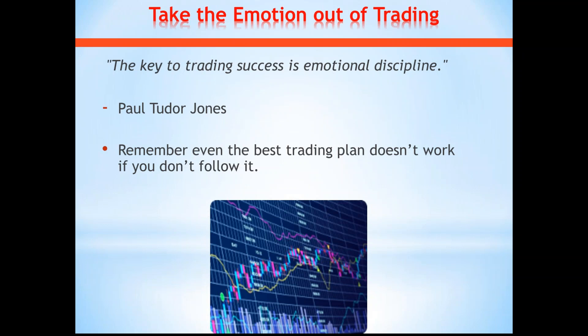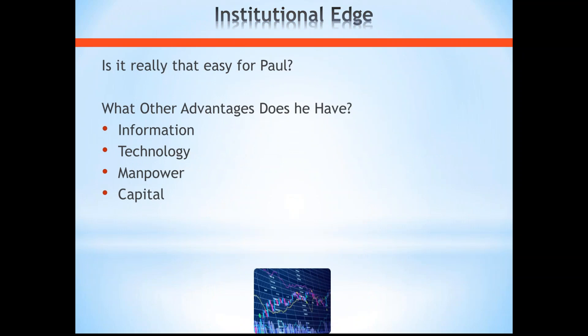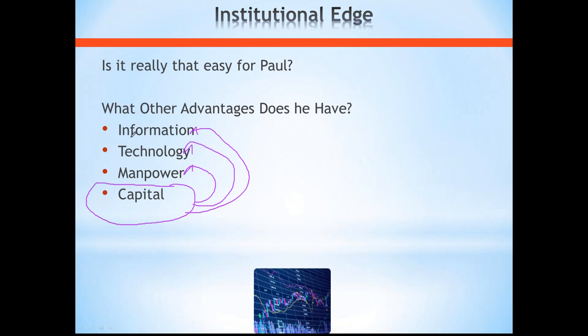But is emotional discipline really all there is to Paul Tudor Jones's success? We want to talk about institutional edge, which is mainly derived from capital. They have so much more capital than a retail trader, and that capital gives them access on a higher level to information, technology, and analysis. The more capital an institution has, the higher quality information they can get. I can get information on the internet, but I can't pay for Bloomberg terminals or afford the technology to do the same level of analysis.